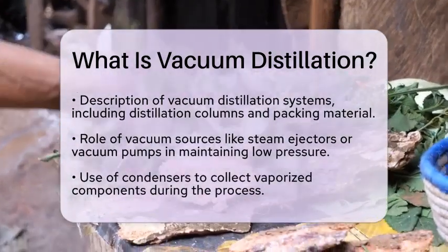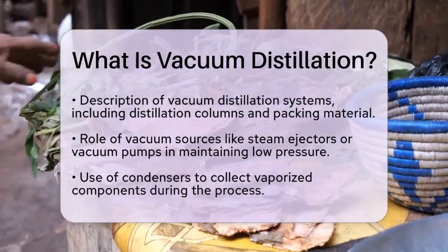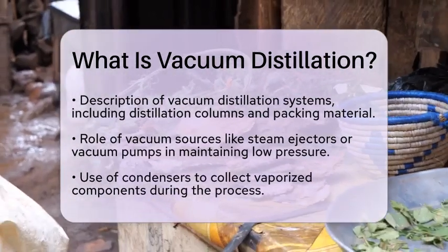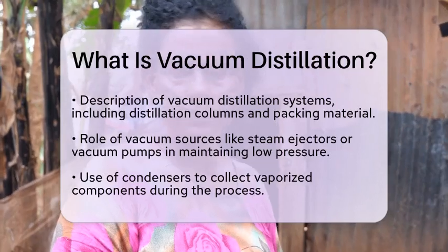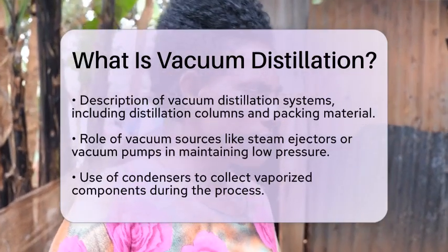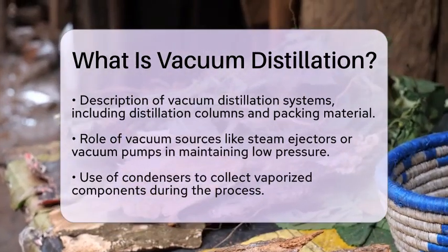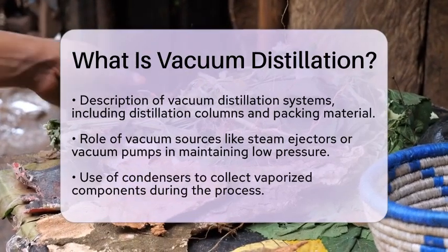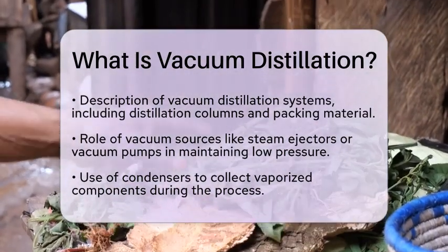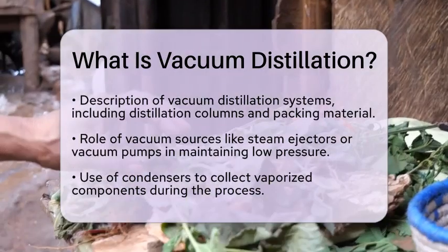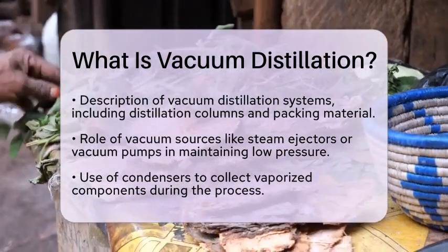In practical terms, vacuum distillation systems include a distillation column with packing material to increase surface area. They also have a vacuum source, such as a steam ejector or vacuum pump, to reduce pressure. Additionally, condensers are used to collect the vaporized components. It is essential to maintain the vacuum throughout the system to keep the boiling points low during the process.